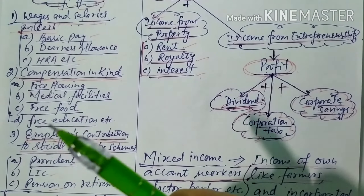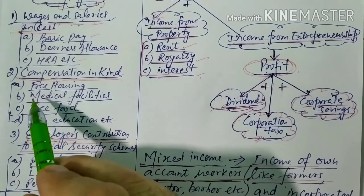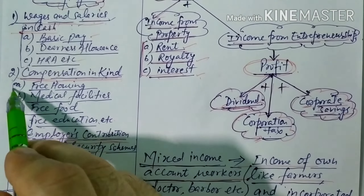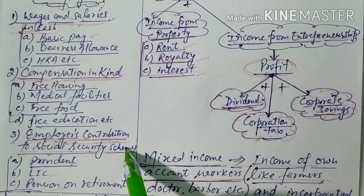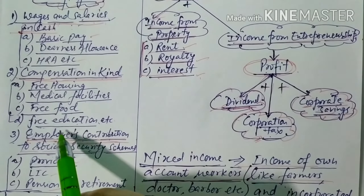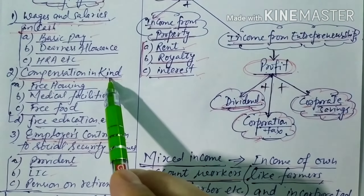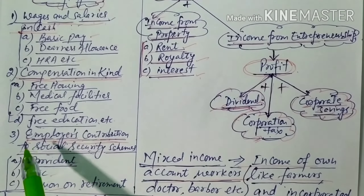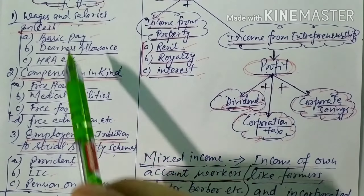Compensation in kind is not in the form of cash but in the form of facilities — for example, free housing, medical facilities, free food, free education, etc. Third is employer's contribution to social security schemes, which includes provident fund, life insurance, pension on retirement, etc. By adding wages and salaries, compensation in kind, and employer's contribution to social security schemes, we get the compensation of employees.